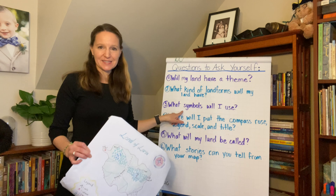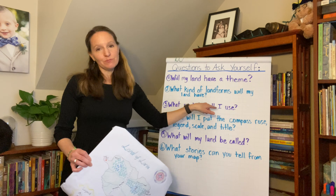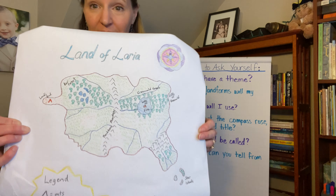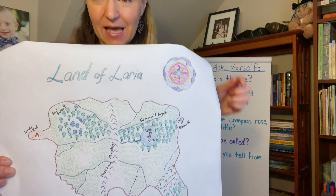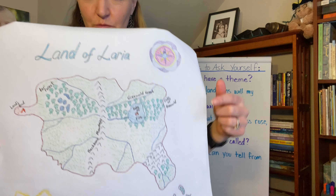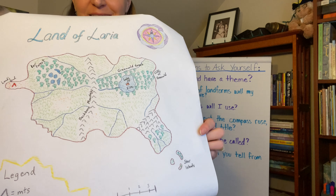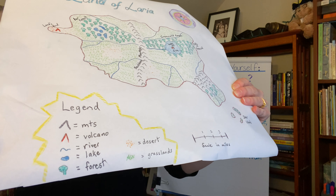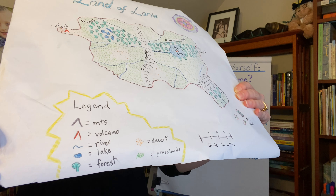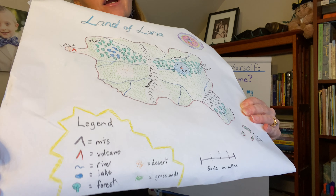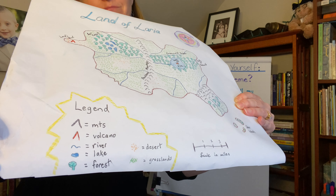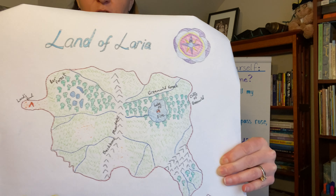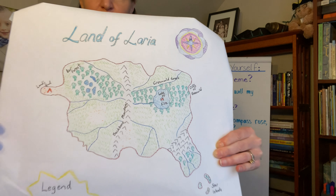You're also going to want to decide what symbols you're going to use. That goes with your landforms — when I decided where my landforms would go, I had to decide how I was going to show them. Here's my legend. You can see I have one little picture of each symbol, then I show what it means in a word, and then I've used those symbols on my map.